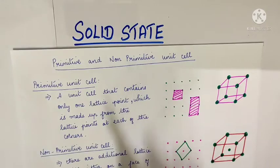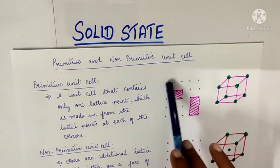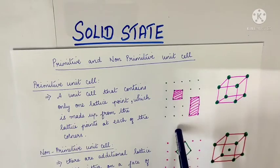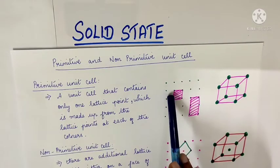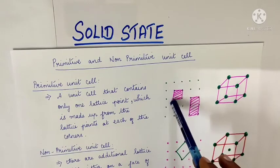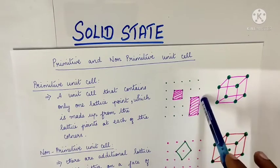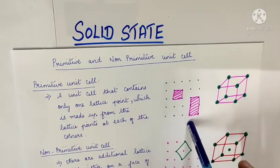So a primitive unit cell is a unit cell with one lattice point. Now we are going to look at the diagram. One lattice point connects to another lattice point, and this is the unit cell form.